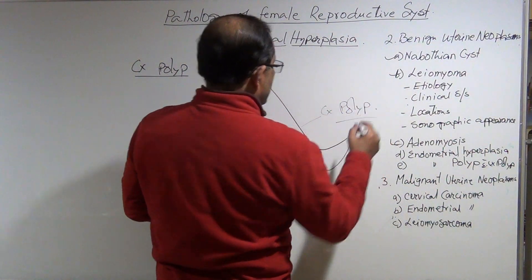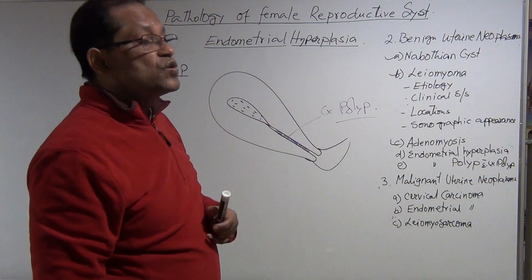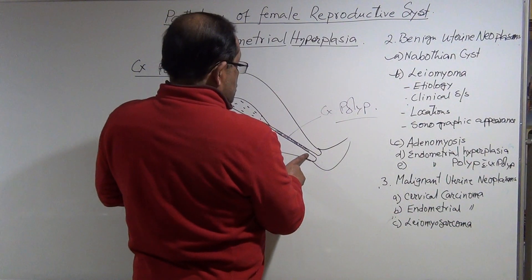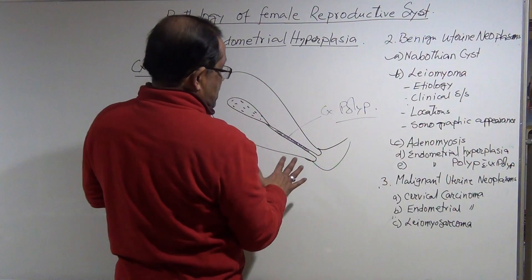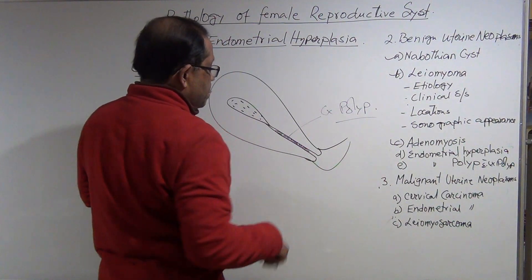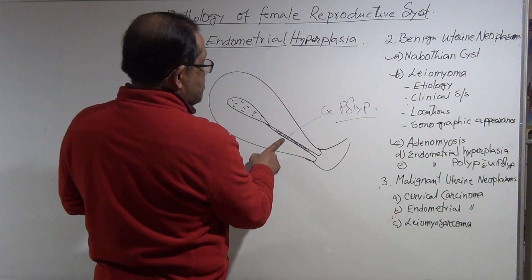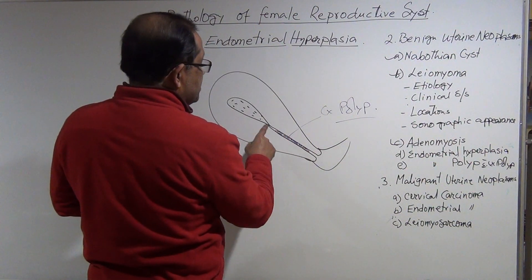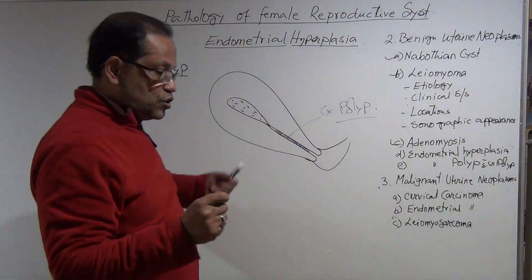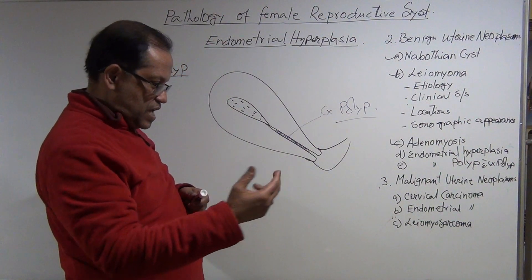To confirm a cervical polyp, we need to perform hysteroscopy — direct visualization of the uterus. The hysteroscope passes through the cervix, the cervical canal is dilated, and the mass that looks like a polyp attached to the wall is identified. It is then removed by cutting and cauterization, and sent for biopsy.